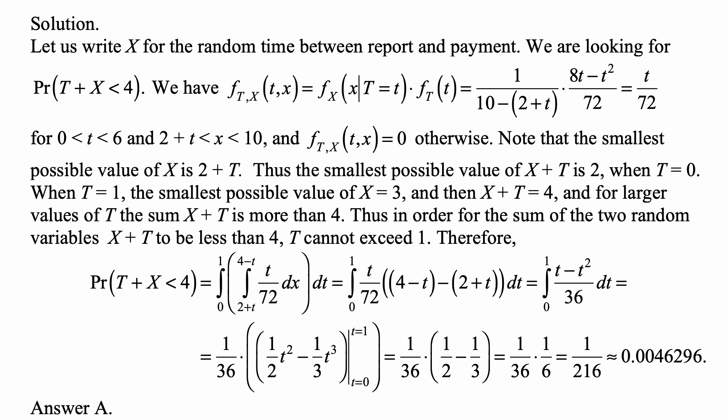Well, those are given. The conditional density is uniform on the interval from 2+t to 10. So its density is a constant equal to 1 over (10 - (2+t)). Remember, this is for a specific value of t.